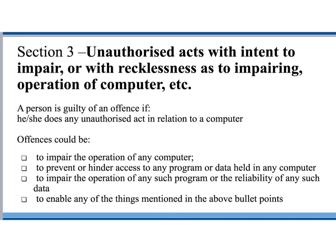Section 3 is unauthorised modification of computer material. This covers having the intention to impair or delete any information on a computer system, and also covers purposely introducing viruses to people's systems. If you knowingly transmit a virus to others, you are guilty under this section of the Computer Misuse Act. This offence carries a penalty of up to five years and/or a fine, and the fine can be an unlimited amount depending on the damage caused.